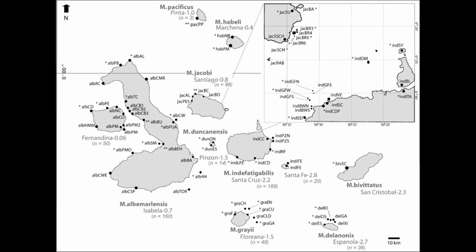As for the western radiation, this consists of seven species that inhabit most of the western and southern islands. Most Galapagos Islands have their own unique species: M. albemarlensis is on Isabela and Fernandina, M. pacificus is on Pinta, M. jacobi is on Santiago, M. indefatigabilis is on Santa Cruz and Santa Fe, M. delanonis is on Española, M. duncanensis is on Pinzon, and M. grayi is on Floriana. The eastern radiation originated on San Cristobal, the western on Española — these are the oldest islands of the archipelago.